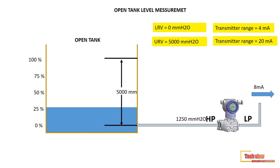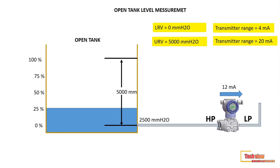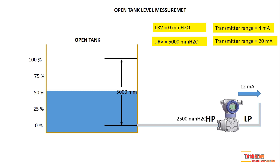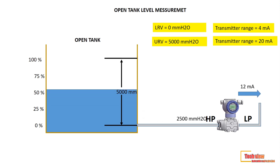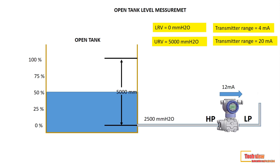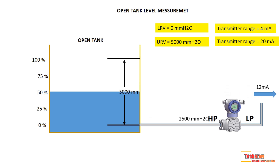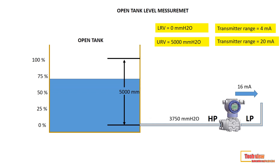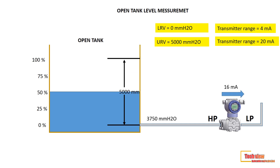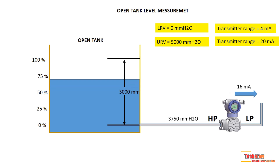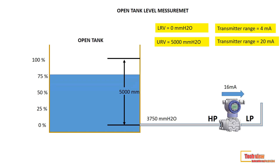When the level rises to 50% of the tank, pressure rises to 2500 mmH₂O, and the transmitter converts and sends 12 mA to the DCS. When the level rises to 75%, pressure rises to 3750 mmH₂O, and the transmitter converts and sends 16 mA to the DCS.